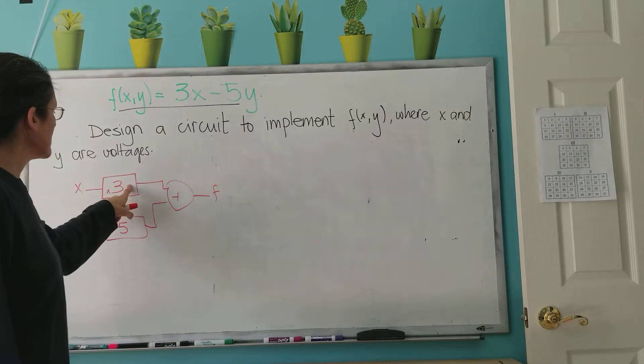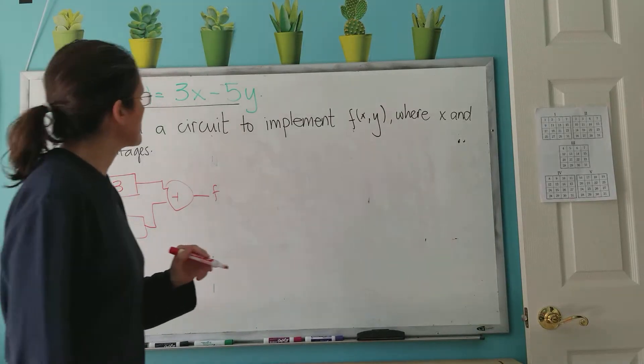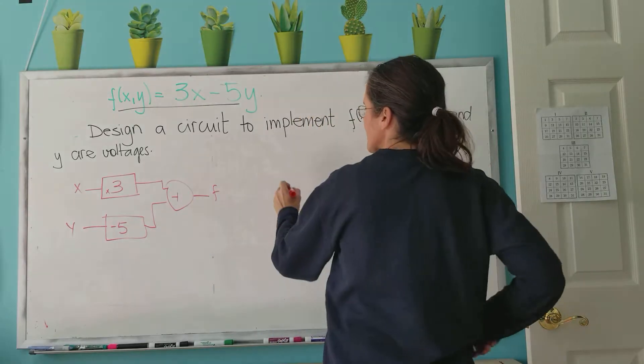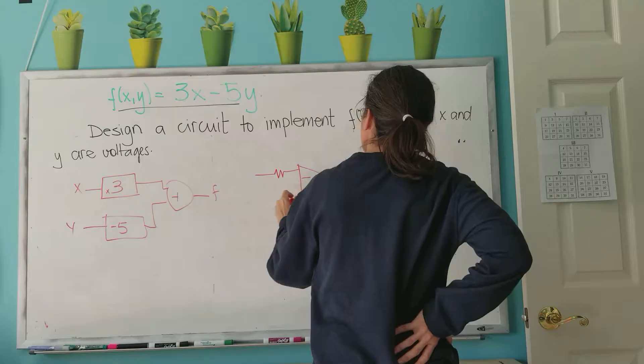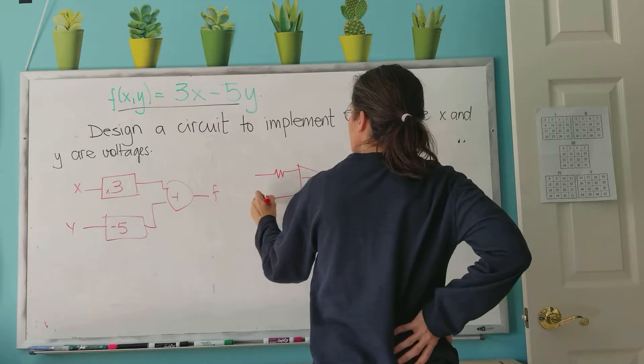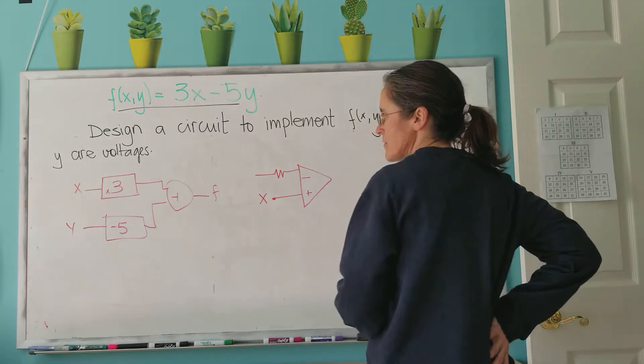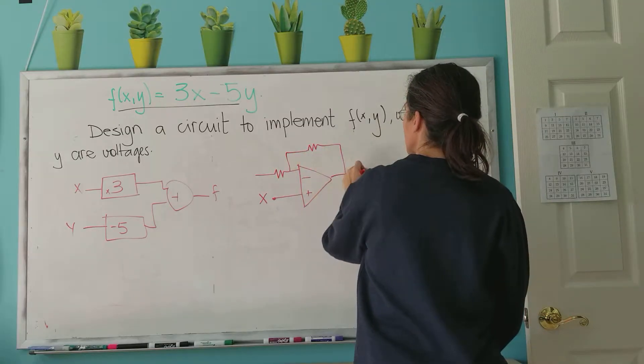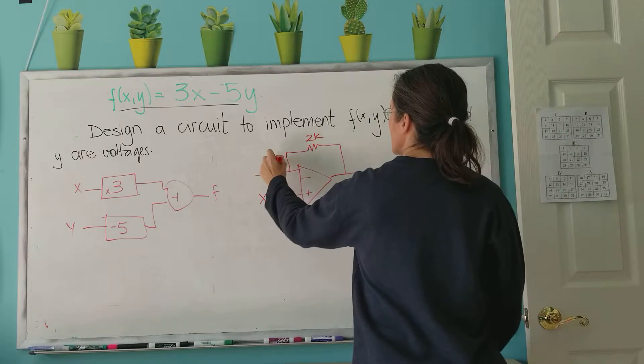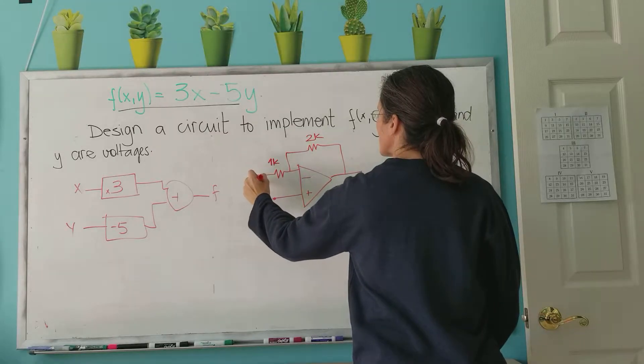I could implement a non-inverting amplifier that multiplies x by 3. So this is x, which is a voltage supply or an input. And to multiply this by 3, I'm going to select 2k and 1k, and I'm going to hook this up to ground.